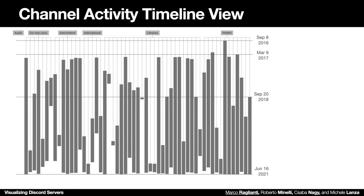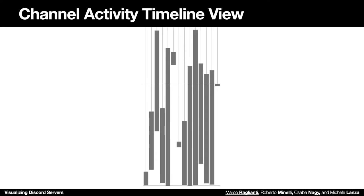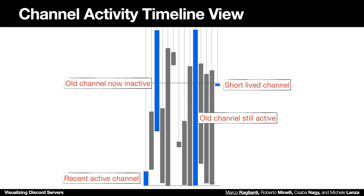In the channel activity timeline view, we can see a time-based representation of channels, where the height of a channel is its activity span. In a cut of this view, we can see different types of channels and how they are represented visually — for example, channels that are now inactive, short-lived channels, recently active channels, and old channels that are still active. The bottom line represents the recent point in time where the channels have been active.